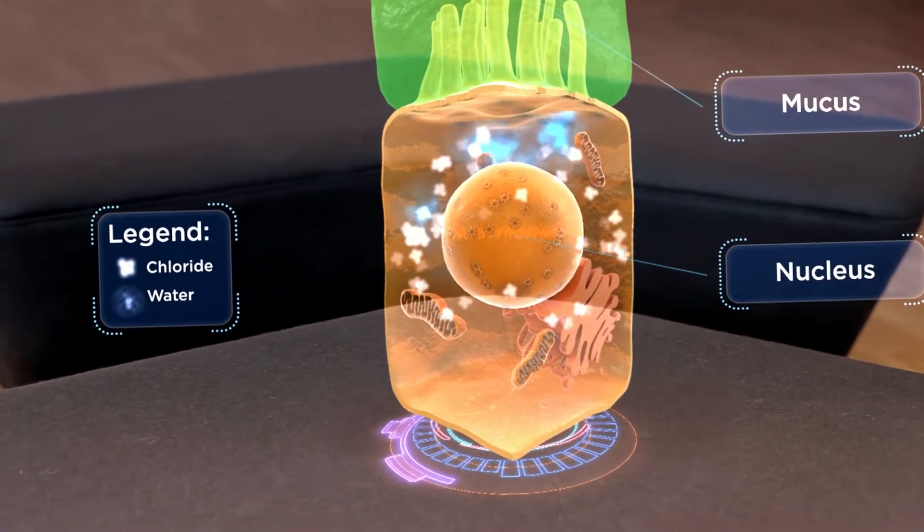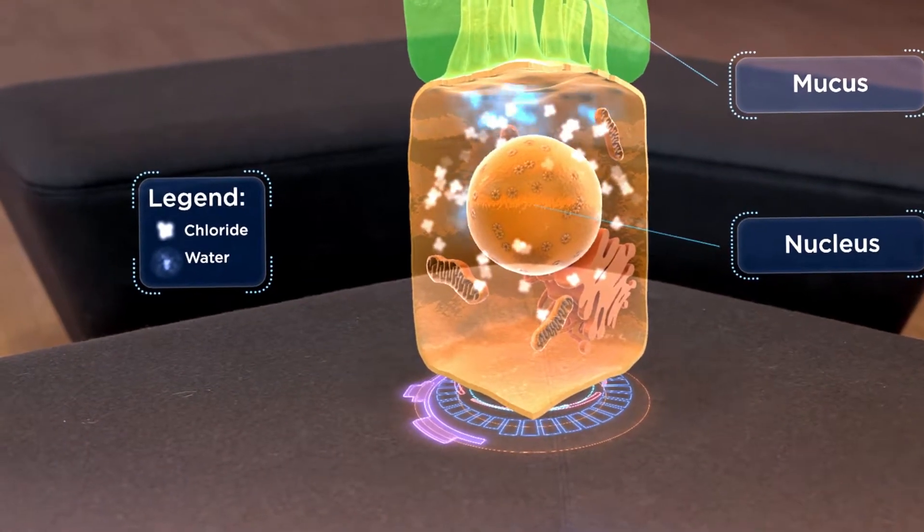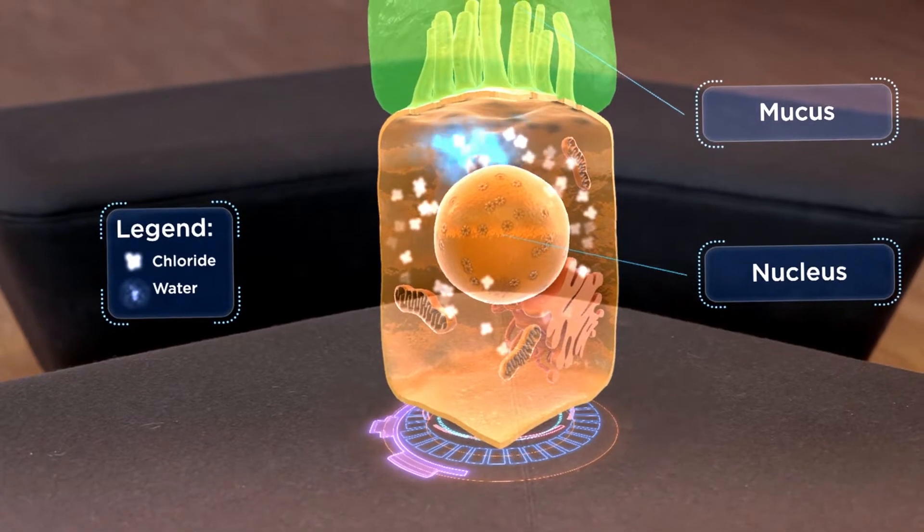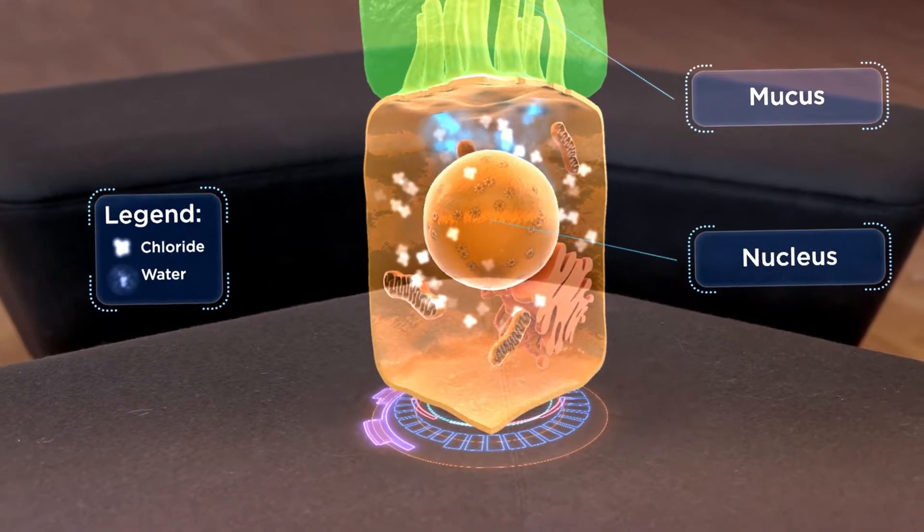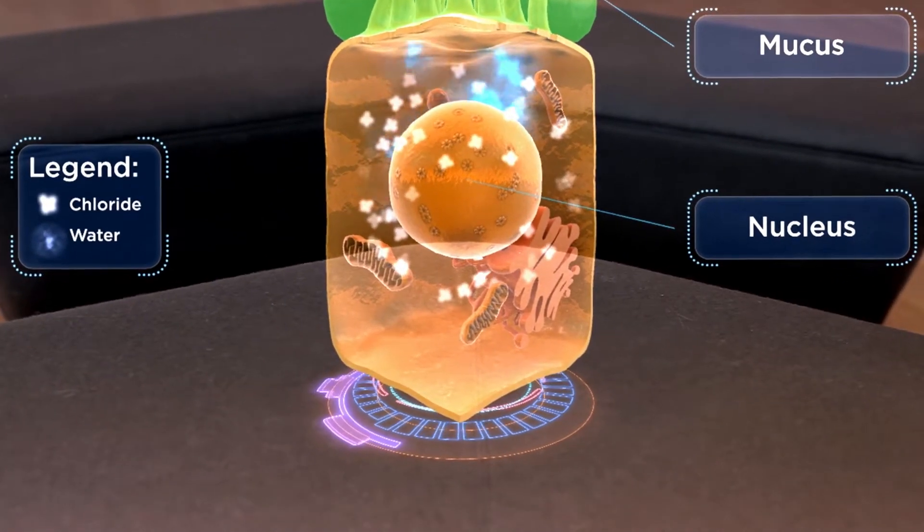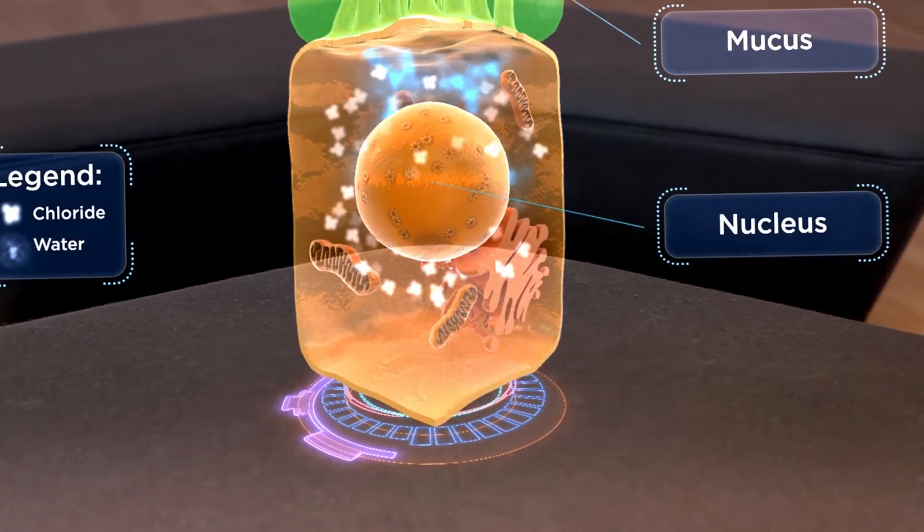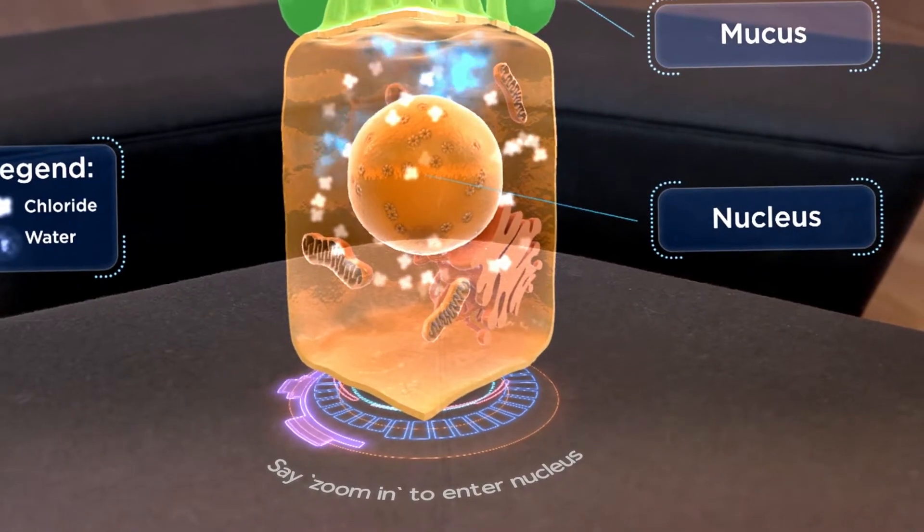Here, at the cell, the balance of water becomes affected when CFTR transporters are unable to regulate ion flow across the cell membrane. These transporters may be defective or absent, thus trapping chloride ions within the cell. This results in water moving away from the mucus, making it thick and sticky. Now let's continue into the nucleus to locate and repair the mutation in the CFTR gene causing this ion imbalance. Zoom in.